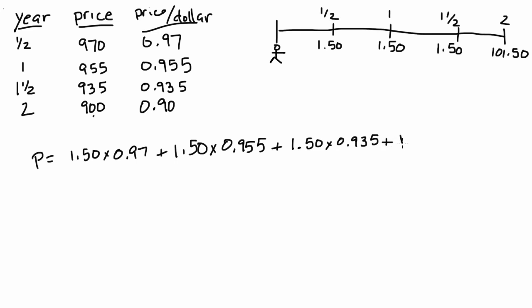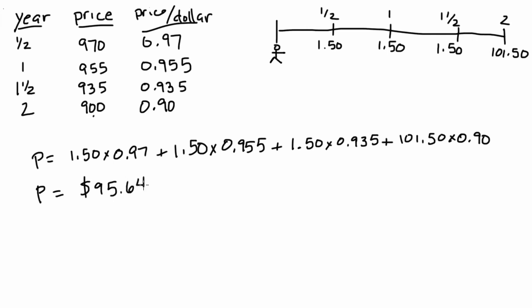In two years we're going to receive $101.50 — that is the principal payment plus that final coupon — and for every dollar we receive in two years we're willing to pay $0.90. So if we receive $101.50 and we're willing to pay $0.90 for each dollar, that amount is what we're willing to pay for that final cash flow. Plugging this all into our calculator, we find that the price of this bond is $95.64.